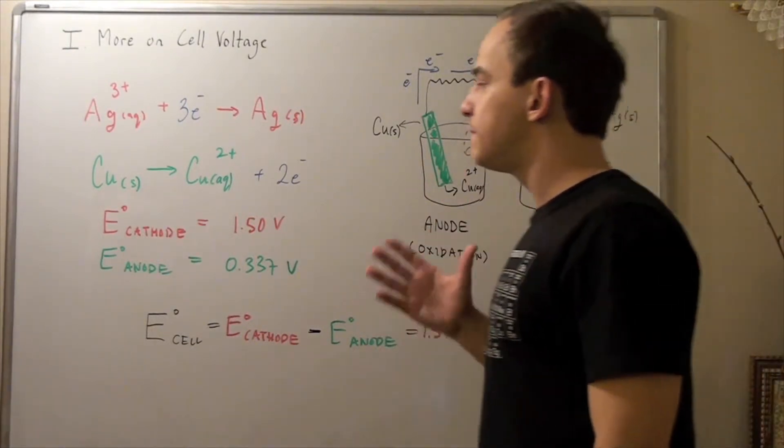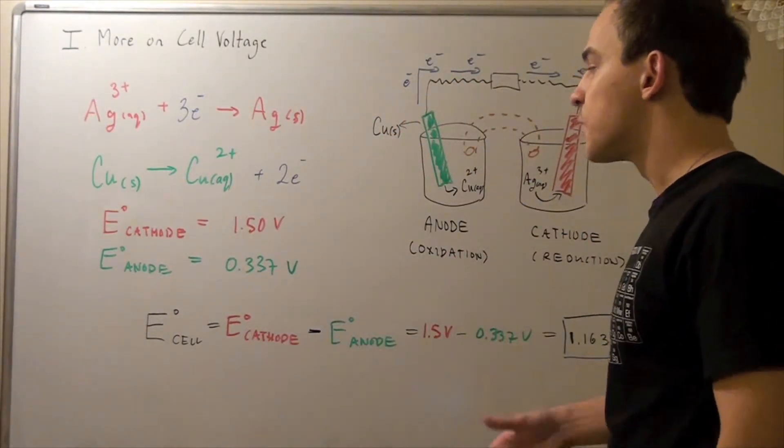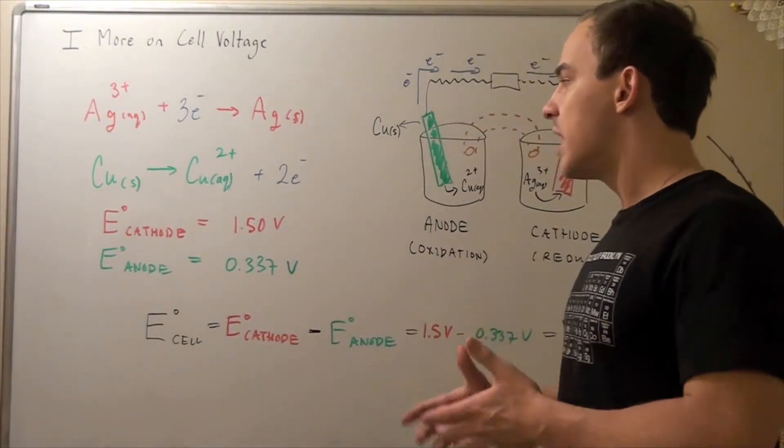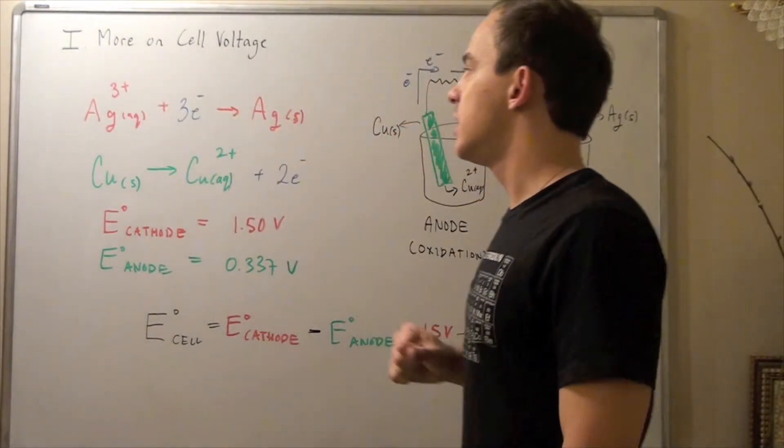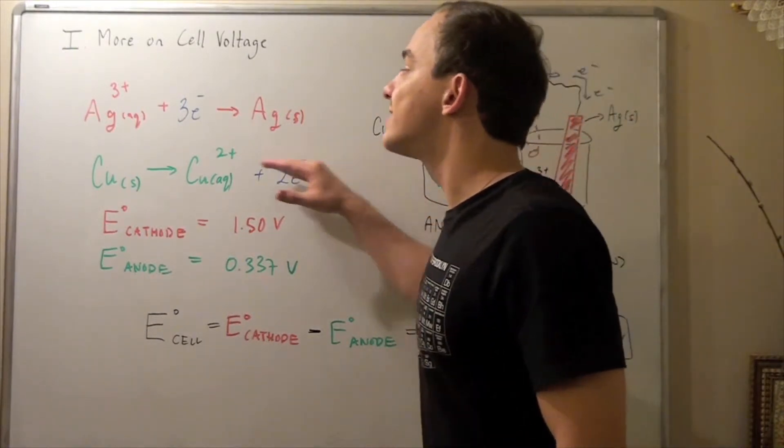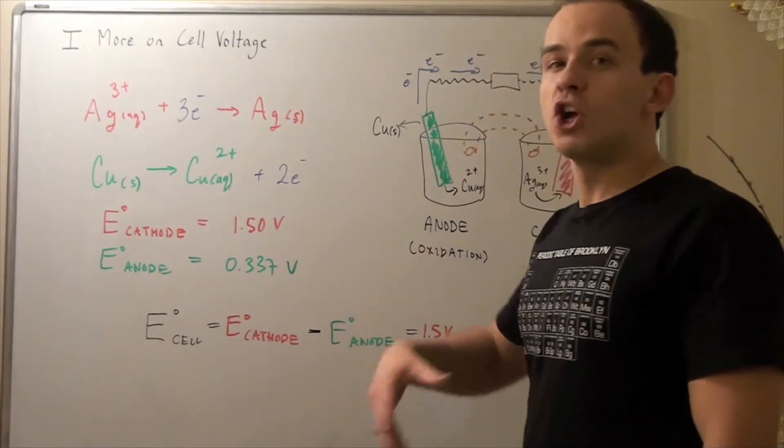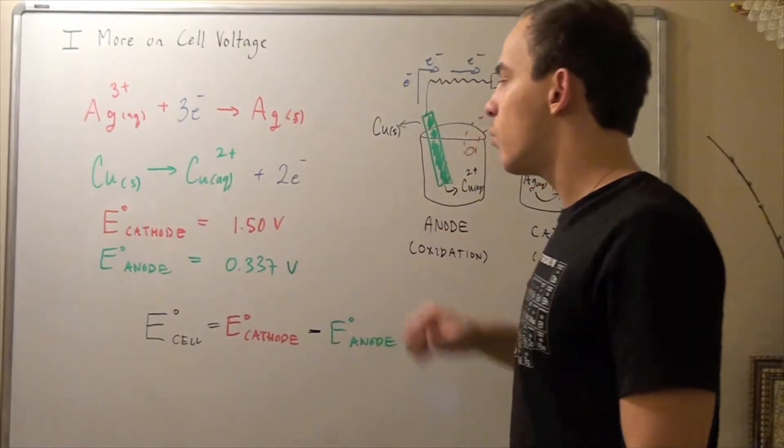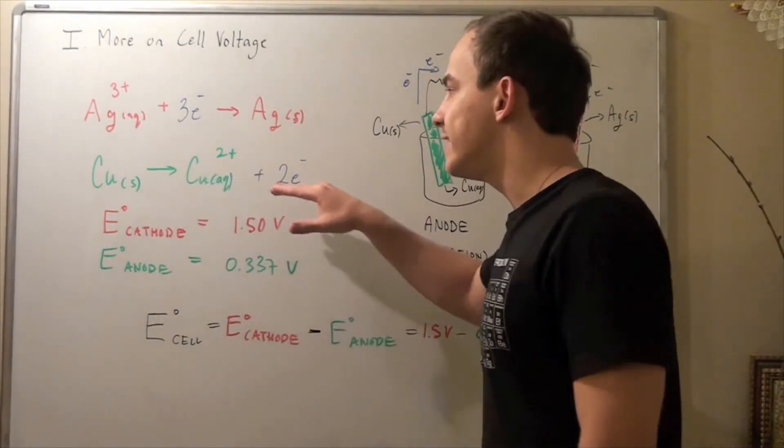Now in order to find the cell voltage of our cell on the standard conditions, we have to look at the standard reduction potential table. And we find the value of the cell voltage for this reduction reaction, and then we find the same value for this oxidation reaction. Now, note that our table shows values for reduction only. And since we want an oxidation as well, we simply use the same magnitude, but flip the sign. So negate it.